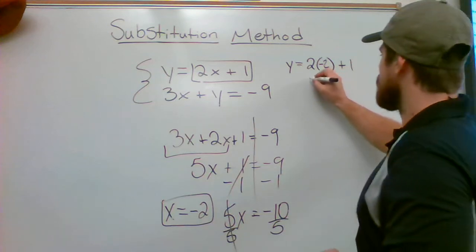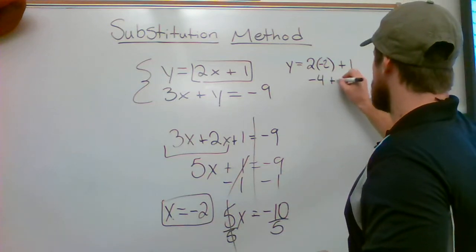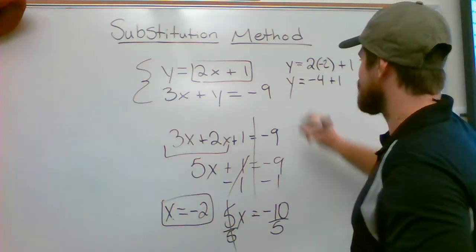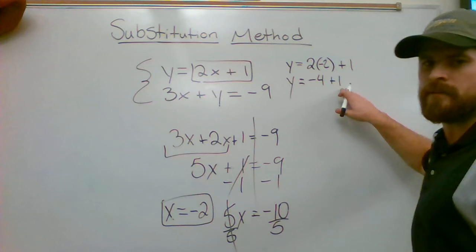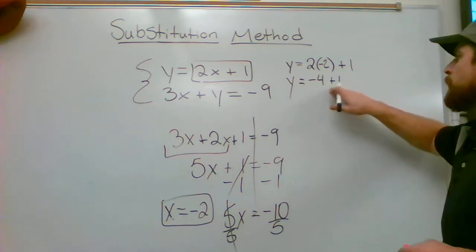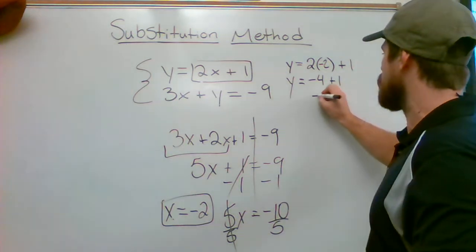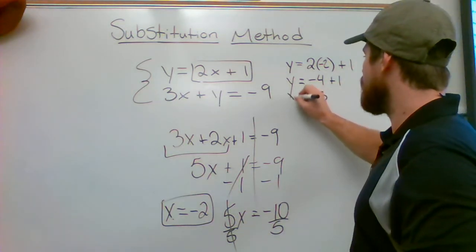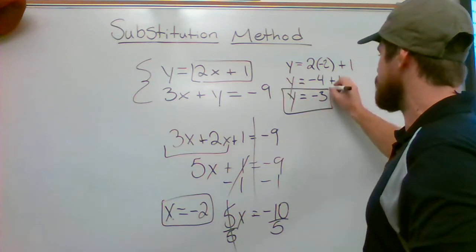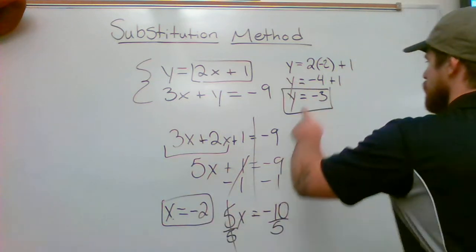2 times negative 2 is going to give me a negative 4 plus 1. Again, I tell you to take your time and be careful with negatives. It's easy to make mistakes. Negative 4 plus 1 is going to give you a grand total of negative 3, and we now have a value for x and y.